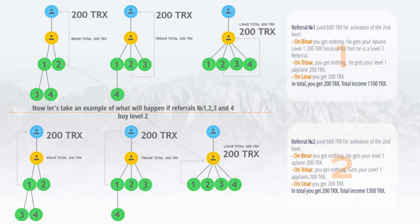Referral number 2 paid 300 TRX to register. In binary, they stand in the second free place out of 2 — you get 100 TRX. In trinary, the second free place out of 3 — you get 100 TRX. In Lina, the second free place from unlimited — you get 100 TRX. In total, you get 300 TRX. Total income: 600 TRX. With these funds, you activate level 2.